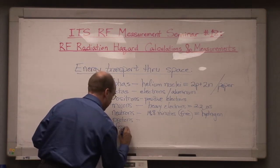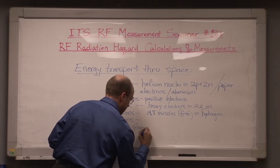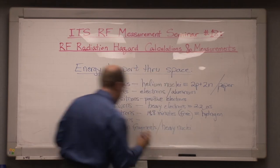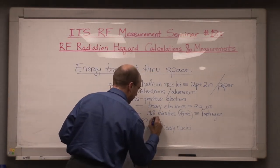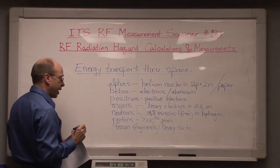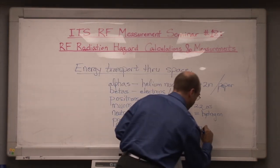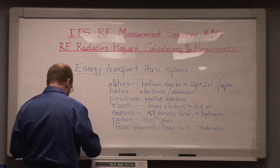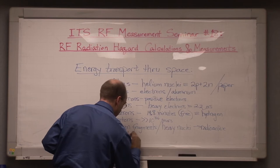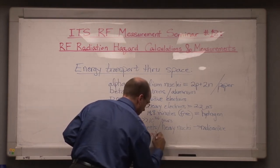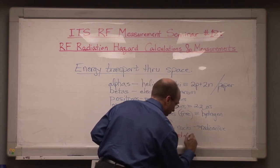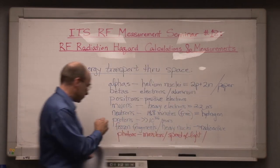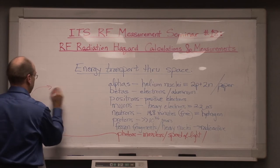Fission fragments are chunks of atomic nuclei that come out of fission reactions. Protons are known to live for more than 10^36 years, although they're predicted to eventually decay. Fission fragments and heavy nuclei are generally unstable and prone to radioactive decay. Finally, we come to photons. Photons are massless, travel at the speed of light, and are immortal — they live forever until absorbed. Photons can have a variety of energy levels.